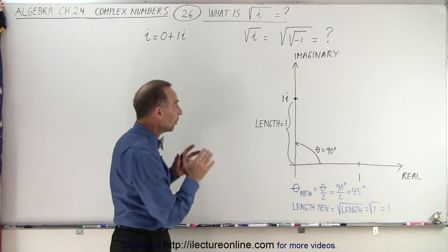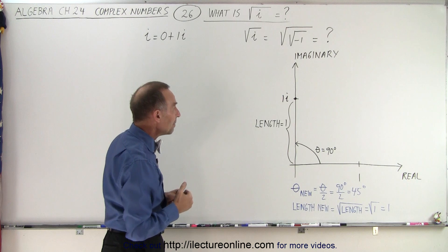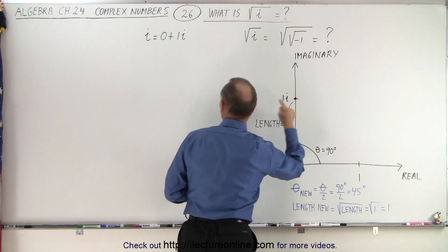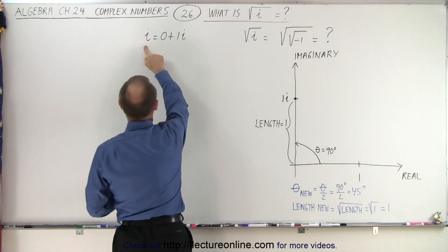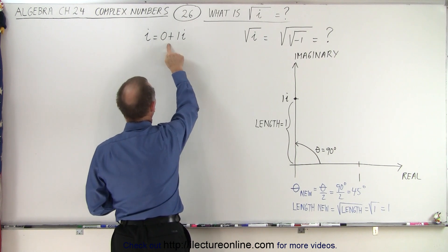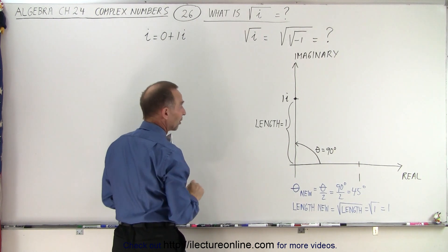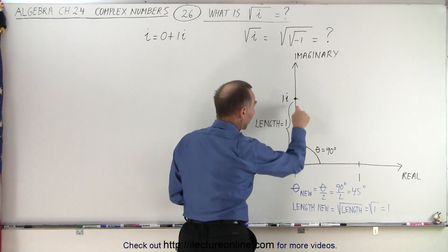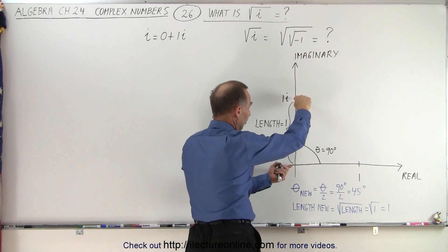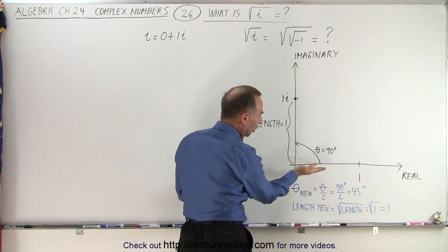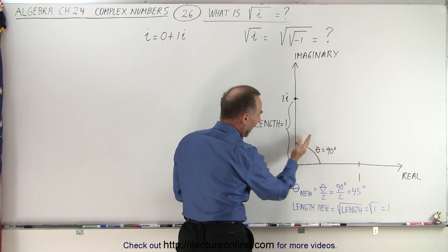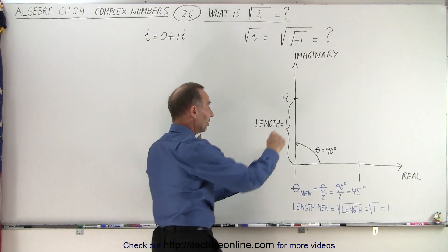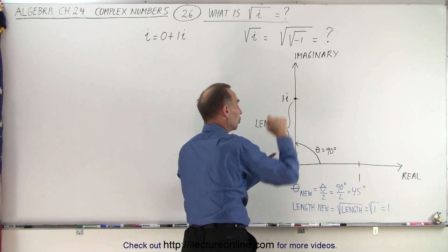Now let's find the number i on the real imaginary plane. Notice that it's right over here because i is simply equal to 0 for the real part plus 1 times i for the imaginary part. So it only has an imaginary part, and so we place it right here on the imaginary axis, a distance 1 away from the origin. Notice that the angle referenced to the real axis is 90 degrees and that the distance from the origin to the point is equal to 1.